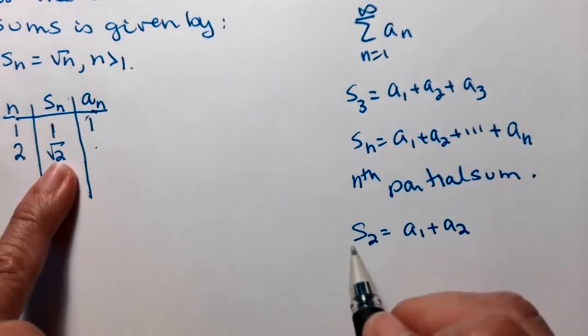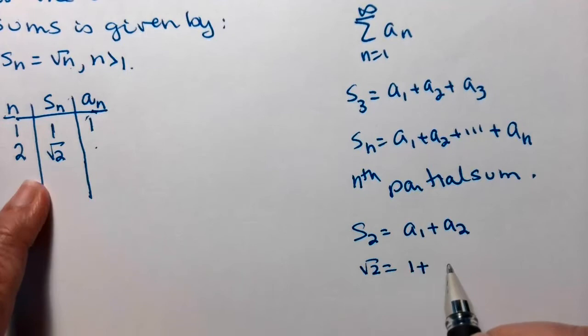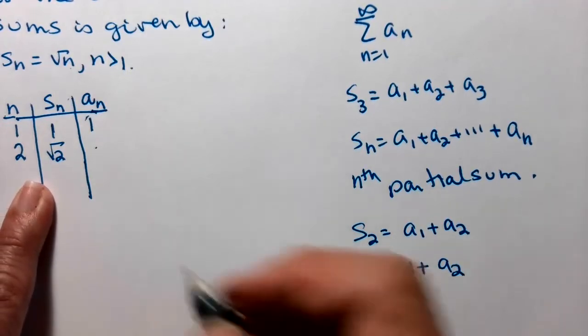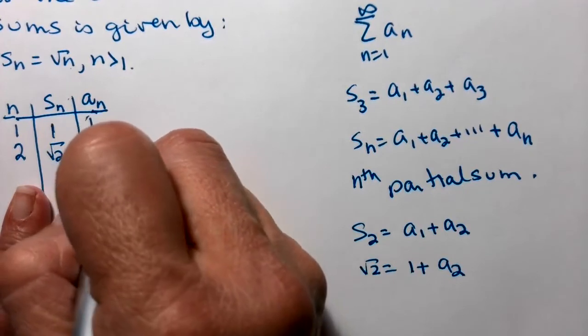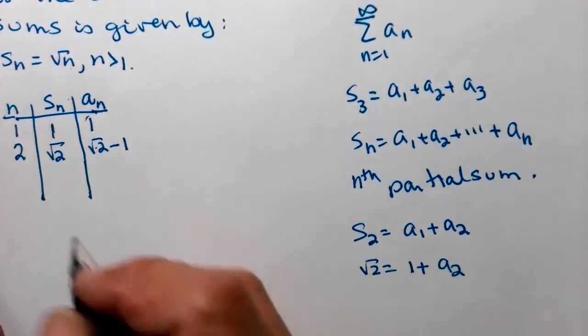So I know that s of 2 is square root 2, a sub 1 is 1, what does that tell me that a sub 2 has to be? Square root 2 minus 1. Add those together, I get my s sub 2.